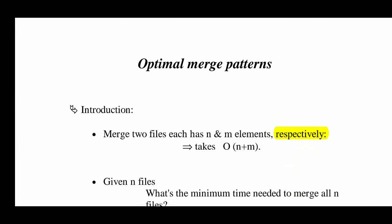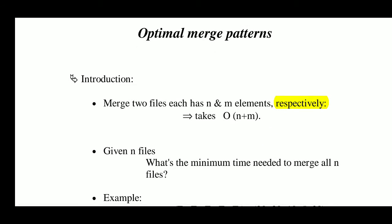One of the problems of the greedy approach is the optimal merge pattern. You are given some files with some number of elements and these files are to be merged. If you are given n files, what is the minimum time needed to merge all n files? Merging two files with n and m elements respectively takes O(n + m) time.